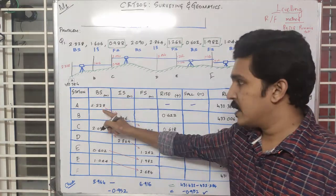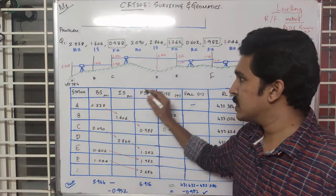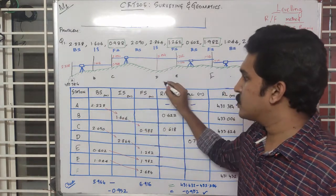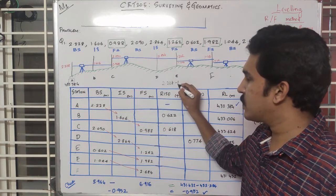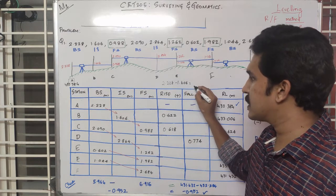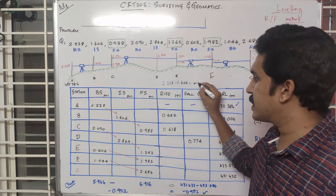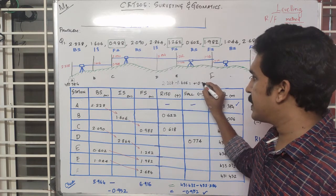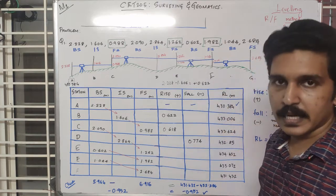Looking at consecutive values: 2.228 minus 1.606 gives 0.622.